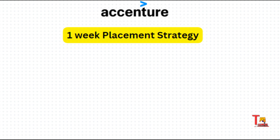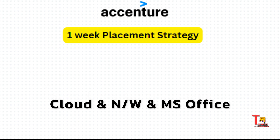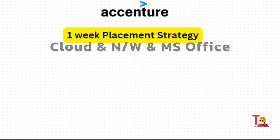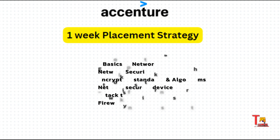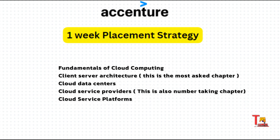Now we will talk about the most important section: cloud and networking security. Total 22 questions are allotted and you have to achieve the sectional marks as well. For cloud and network security, give importance to these chapters: basics of networking, network security, encryption standards and algorithms, network security devices, attack types, and firewalls. Among these, focus on basics of networking and firewalls as these are the number-gaining chapters. For cloud, focus on fundamentals of cloud computing, client-server architecture, cloud data centers, cloud service providers, and cloud service platforms. Among these, focus on client-server architecture and cloud service providers or cloud service platforms — these are the number-taking chapters.